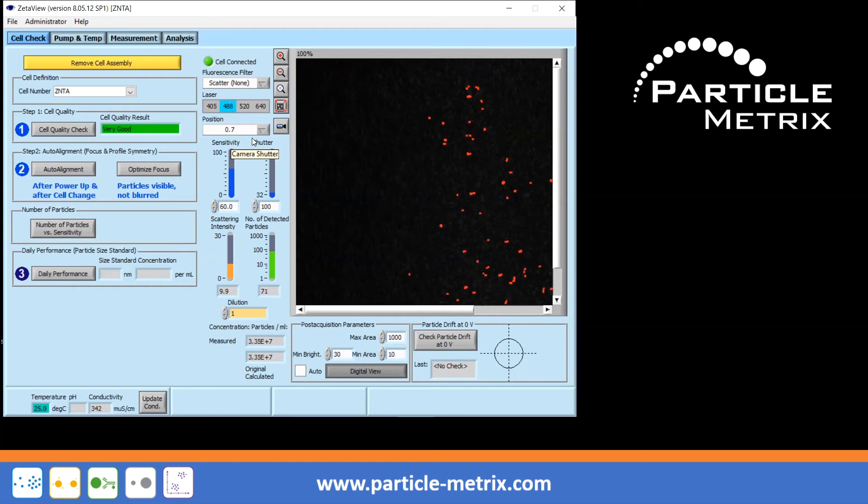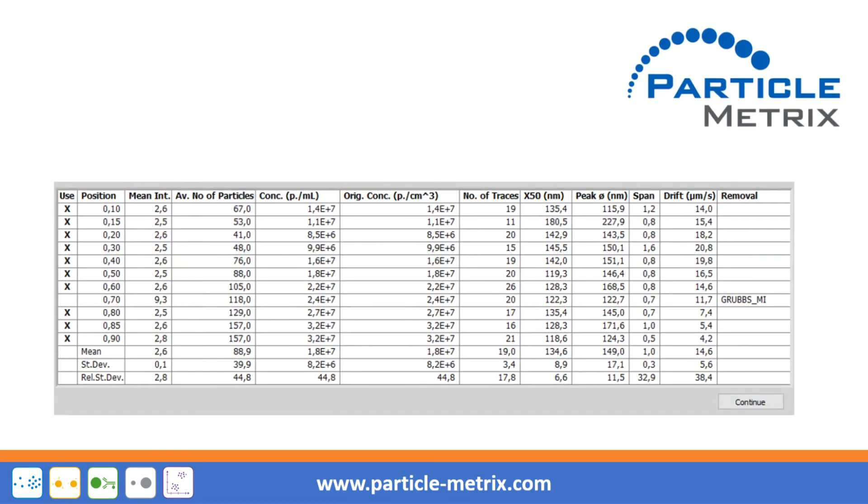If the air bubble cannot be removed in this way and it only occurs in one single measurement position, you can still perform a measurement. The corresponding measurement position is then rated as an outlier in the 11 position table.